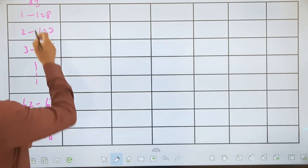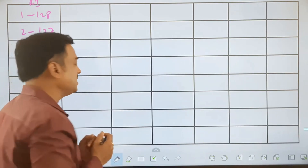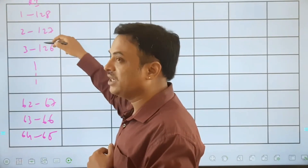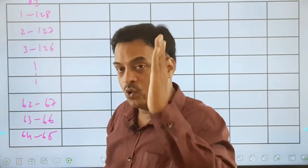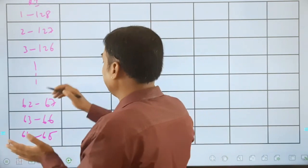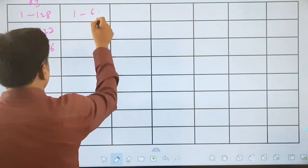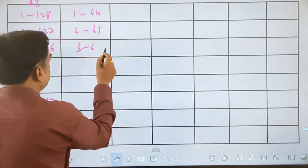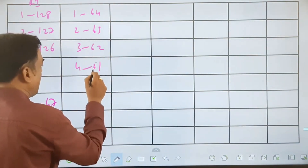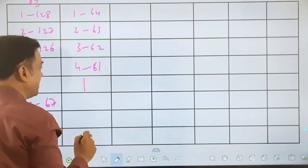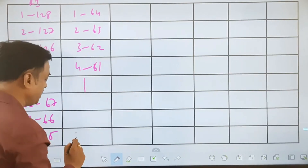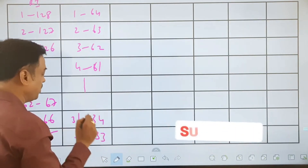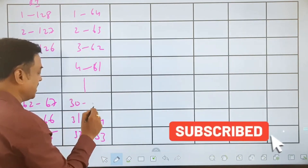If no upset happens, then in round 2: player 1 plays with 64, player 2 plays with 63, player 3 plays with 62, player 4 plays with 61, and it continues. The last matches in this round will be 32 playing against 33, 31 playing against 34, and 30 playing against 35.